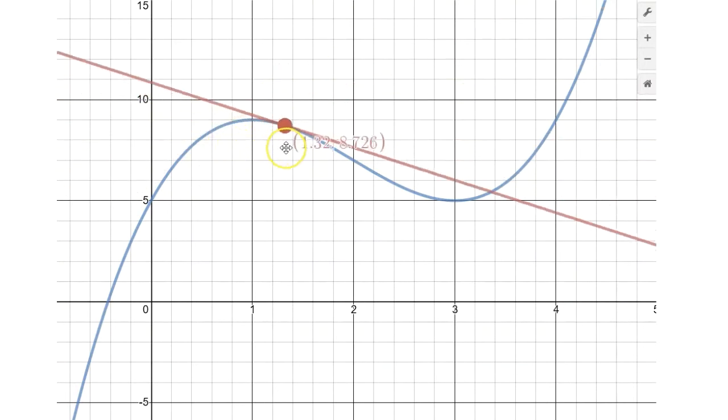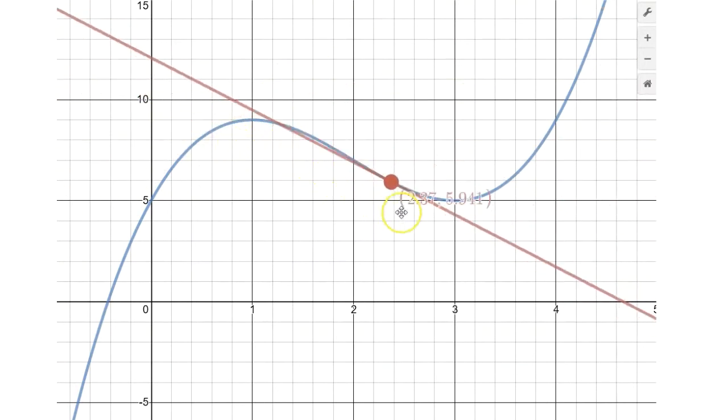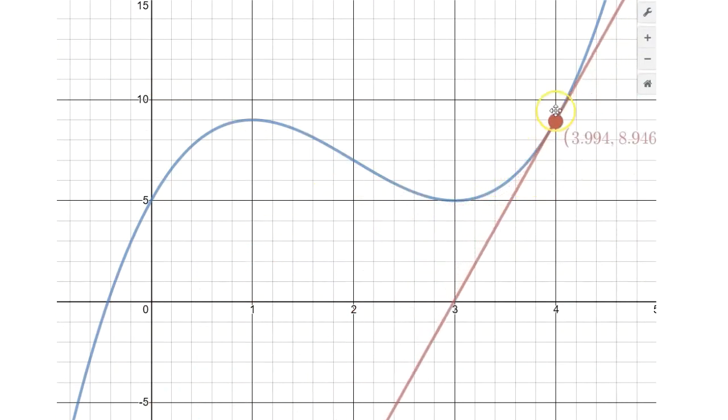Over here in this section of the graph the slope of the tangent line is negative, and then on this other section of the graph the slope of the tangent line is back to positive.